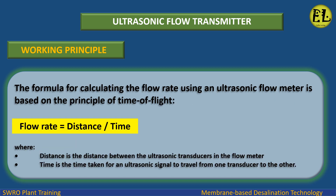The formula for calculating the flow rate using an ultrasonic flow meter is based on the principle of time of flight: flow rate equals distance divided by time, where distance is the distance between the ultrasonic transducers in the flow meter, and time is the time taken for an ultrasonic signal to travel from one transducer to the other.